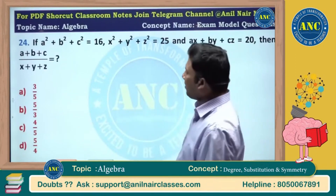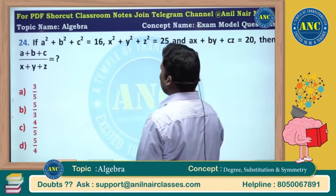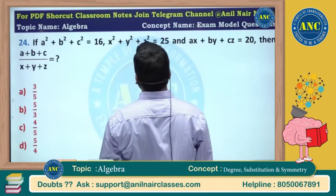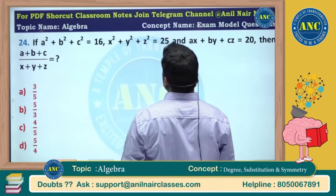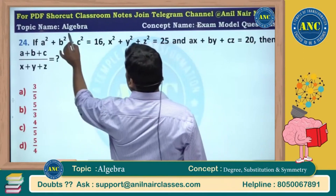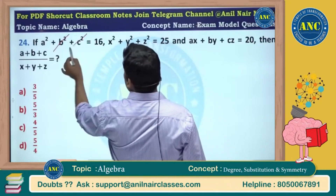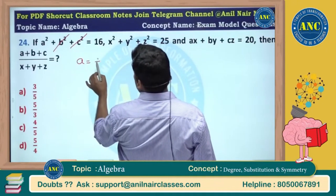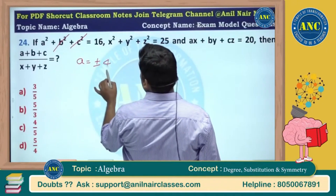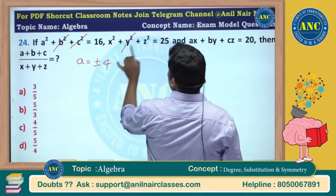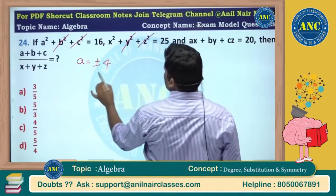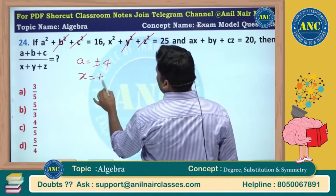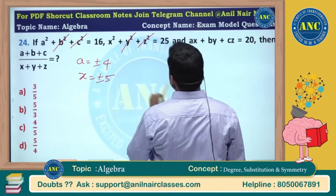a square plus b square plus c square equals 16. We need x square plus y square plus z square. If I make b = 0 and c = 0, then a will be plus or minus 4, y = 0, z = 0, and x will be plus or minus 5.